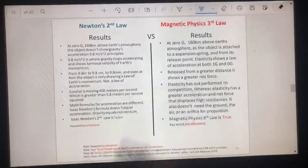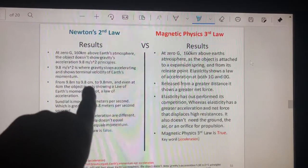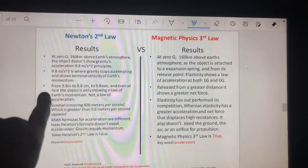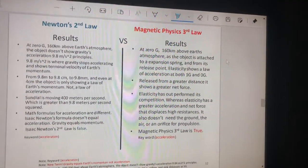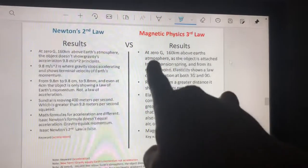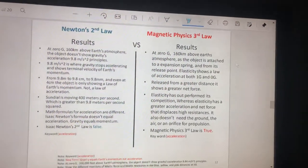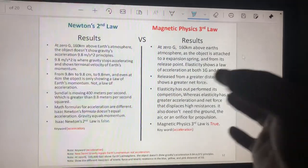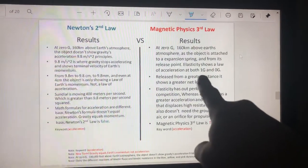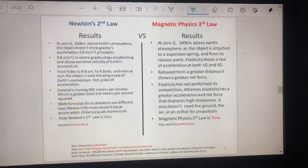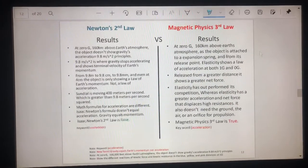Alright, those are the results from that previous experiment. You're going to look right up over here. And even from 9.8 meters to 9.8 centimeters to 9.8 millimeters, the object, even at 4 centimeters, the object is only showing the law of Earth's momentum. If you look over here, even at 160,000 kilometers above Earth's atmosphere, we're talking way out in outer space, you can pull the spring back and release it. And it still showed a law of acceleration at both 1g on the surface of the Earth and at zero gravity, zero forward slash microgravity in outer space.